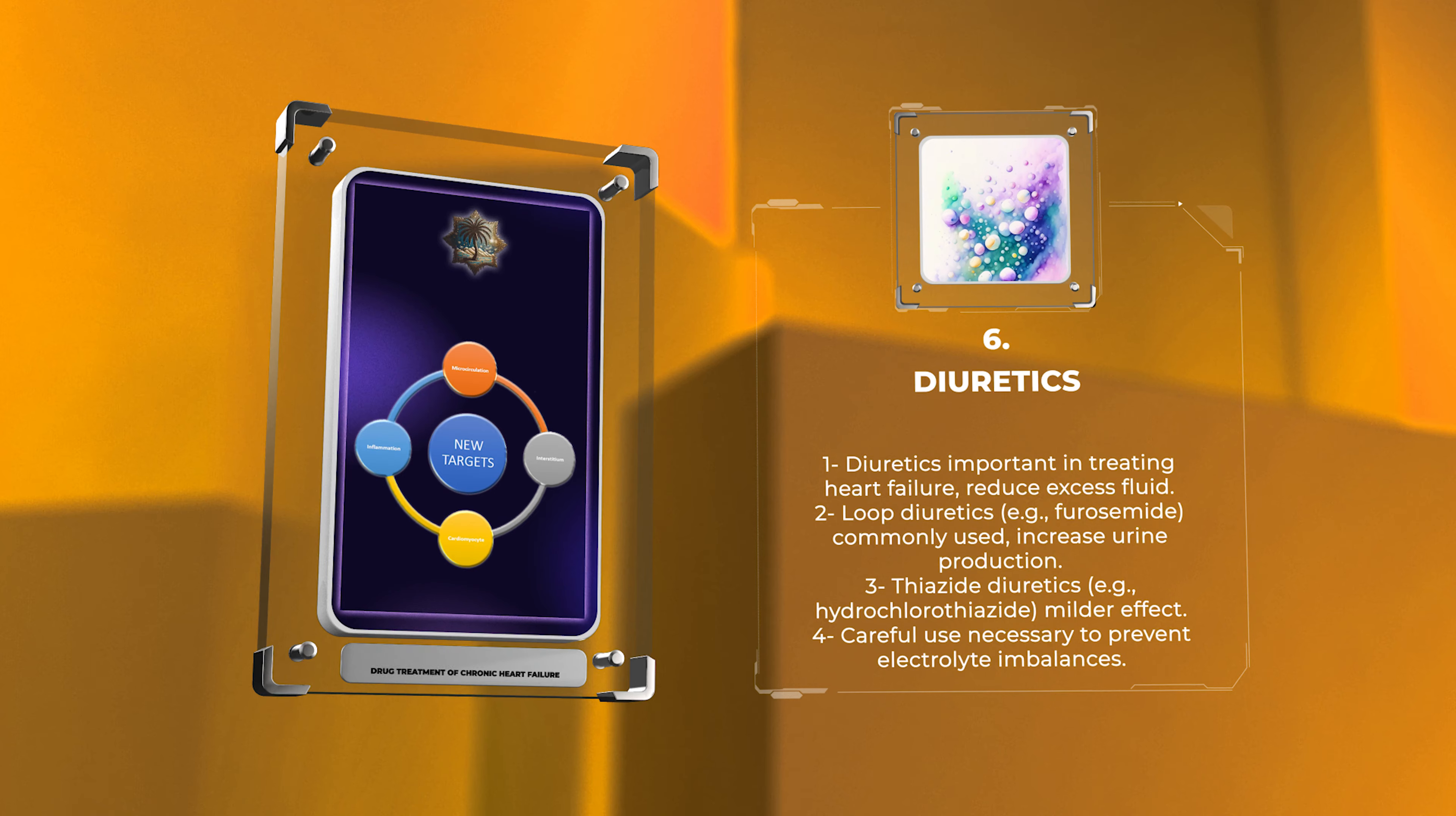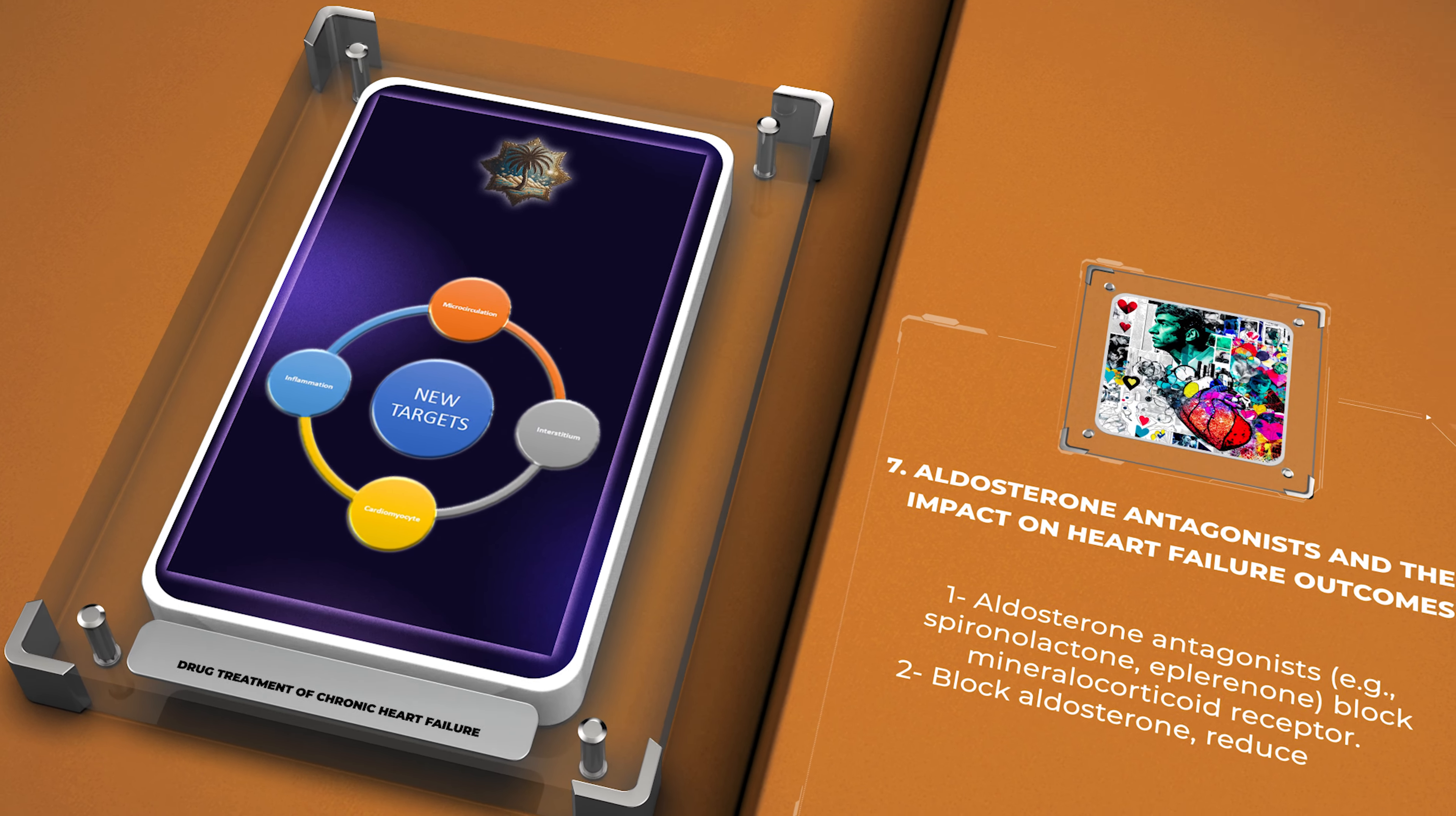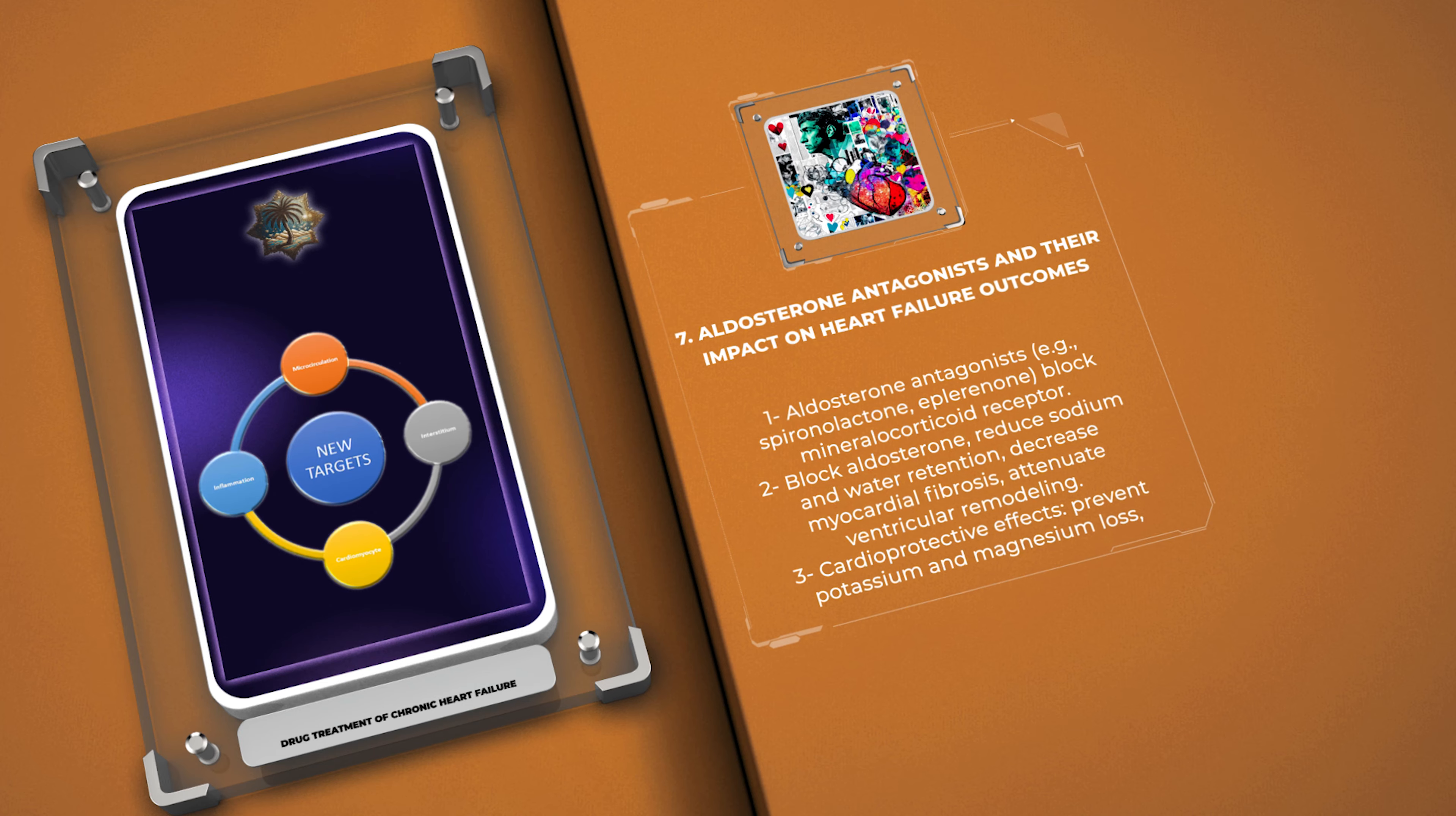Aldosterone antagonists, such as spironolactone and eplerenone, are pharmacological agents that block the mineralocorticoid receptor in the distal tubules of the kidneys. These medications have demonstrated significant benefits in heart failure management.